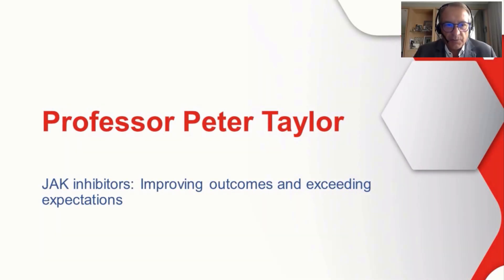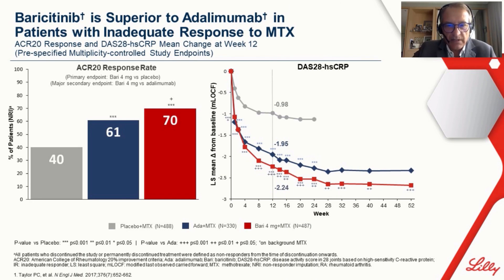The second presentation was by Professor Peter Taylor, who discussed JAK inhibitors improving outcomes and exceeding expectations. He first highlighted the important RA-BIM trial — the first to show that a drug, baricitinib, was superior to the standard of care, adalimumab, on top of methotrexate. The trial was performed in patients with inadequate response to methotrexate, showing ACR response rates on the left and DAS28-CRP change on the right.